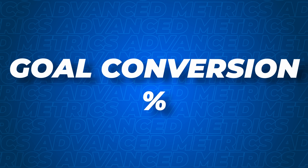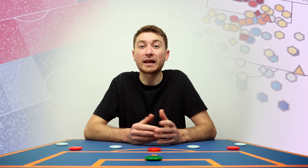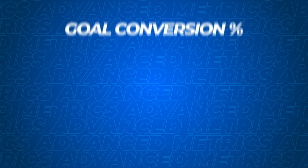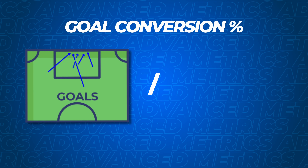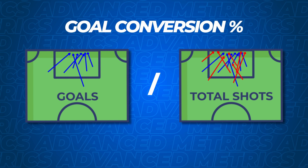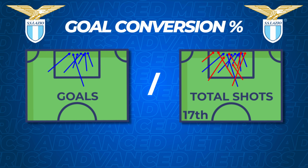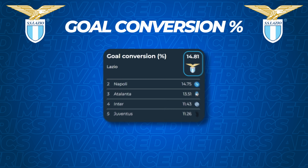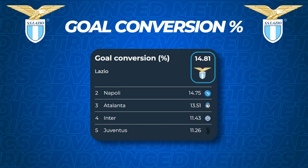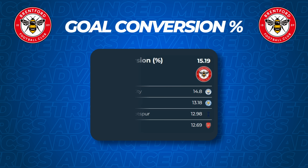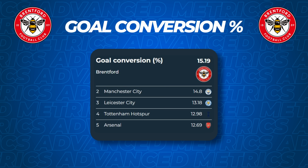The first metric to start considering is goal conversion percentage — an extremely simple calculation, but it gives us great insight into a team's quality in front of goal. It takes a team's total goals divided by the amount of shots taken. In Serie A, Lazio ranks 17th for total shots at 243, but 5th for total goals, giving them a goal conversion rate of 14.8% — the best in the league. Similarly, Brentford topped the charts in the Premier League, converting 15.5% of their shots into a goal.